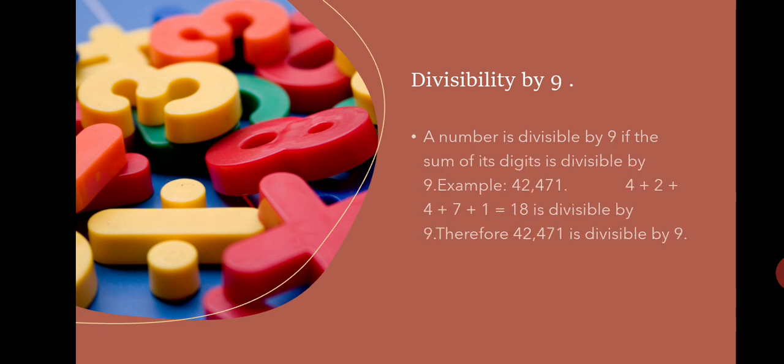Divisible by 9: A number is divisible by 9 if the sum of its digits is divisible by 9. Example: 42471. When we add 4 + 2 + 4 + 7 + 1, which is equal to 18, we know that 9 × 2 = 18. Therefore, 18 is divisible by 9. This implies 42471 is divisible by 9.